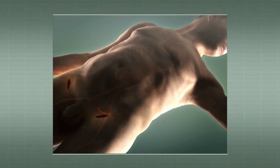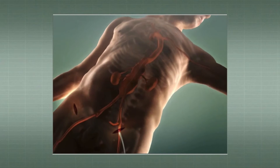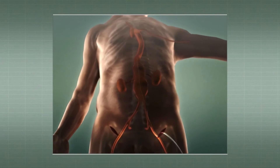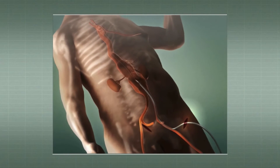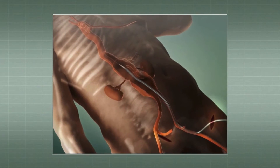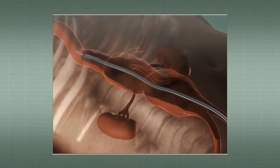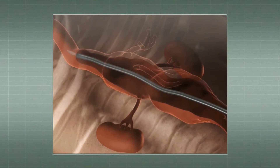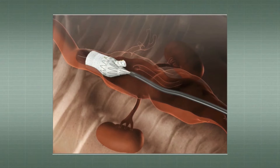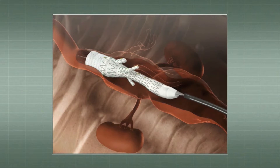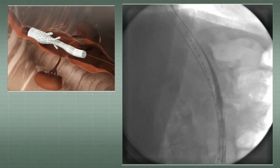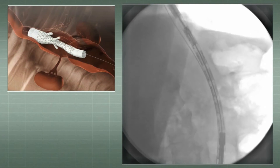Access to the arterial system is regularly performed through bilateral transverse incisions two centimeters above the inguinal ligaments, with control of both common femoral arteries, as well as a third incision to access the distal portion of the subclavian artery, which will later serve to introduce the visceral bridging stents.